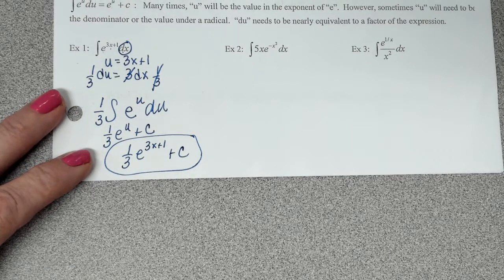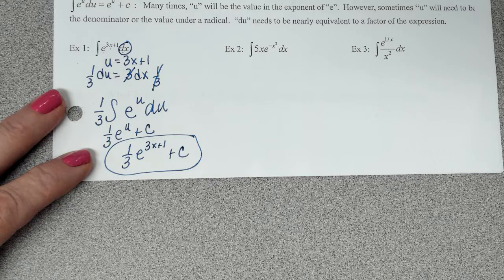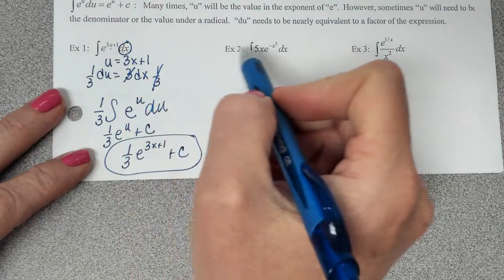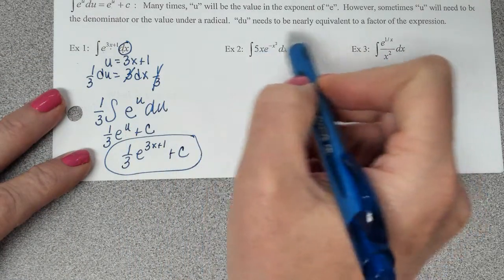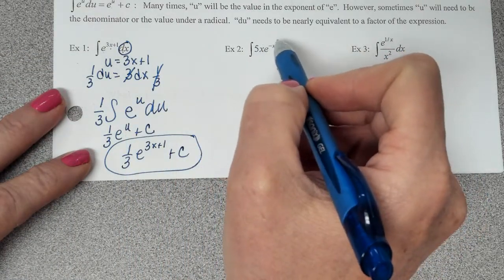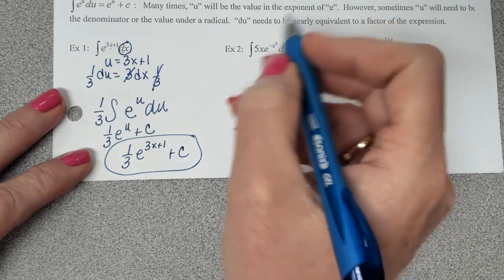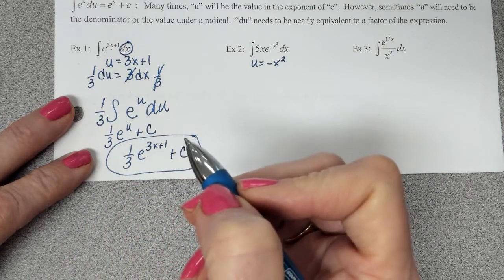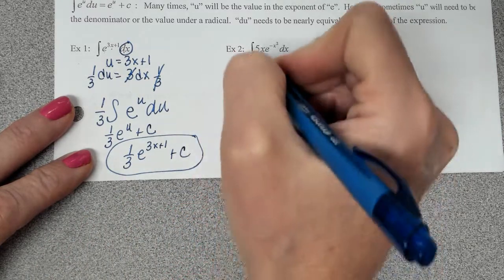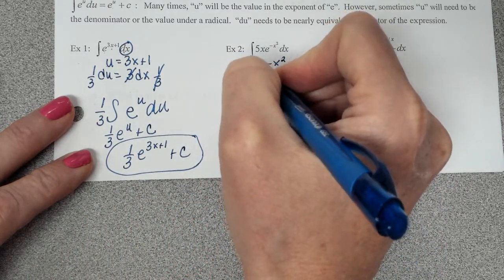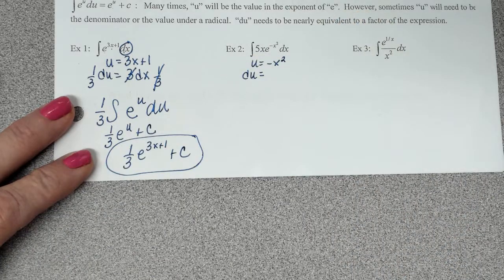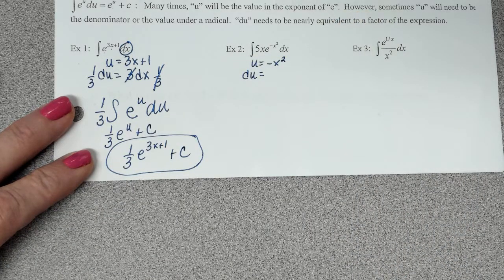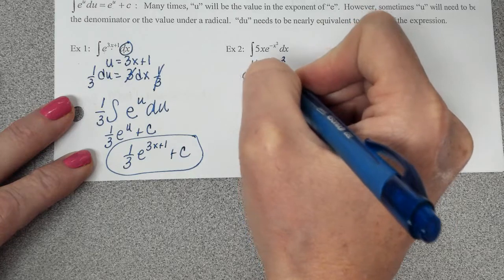So the only thing tough about this is making sure that your du is what you need it to be. Looking at this next one, like I said, most of the time, the u is going to be that exponent value. So we're going to let u equal negative x squared. Teresa, what's the derivative of negative x squared? Negative 2x dx.